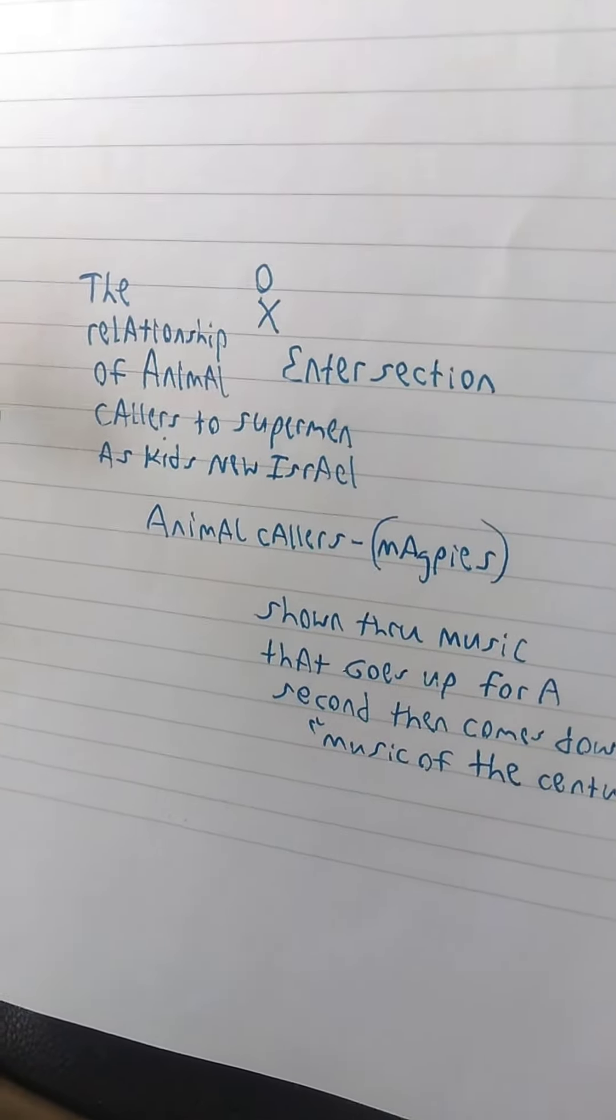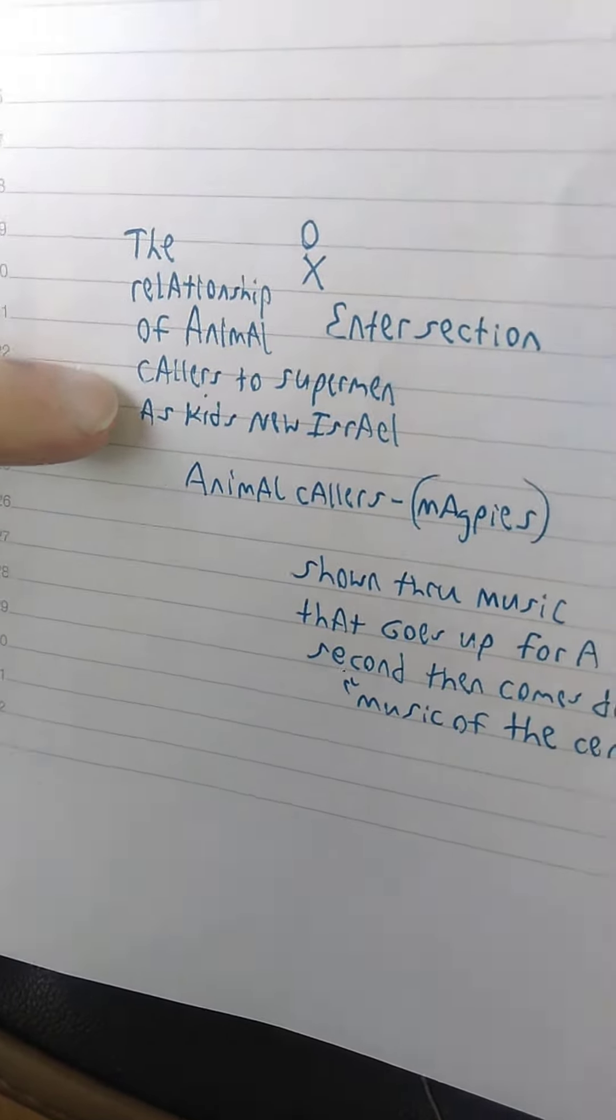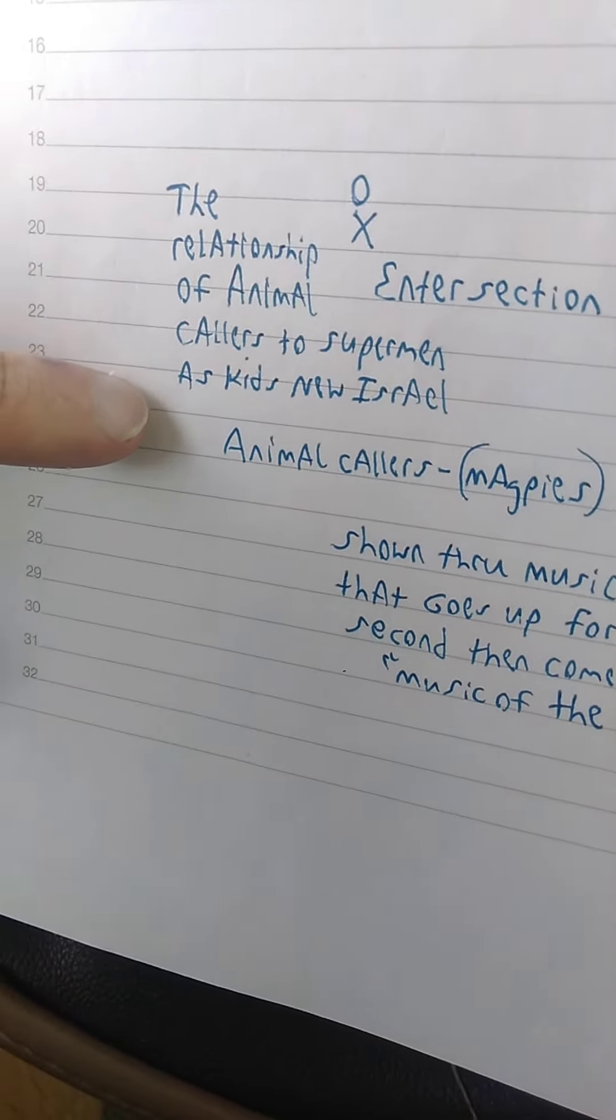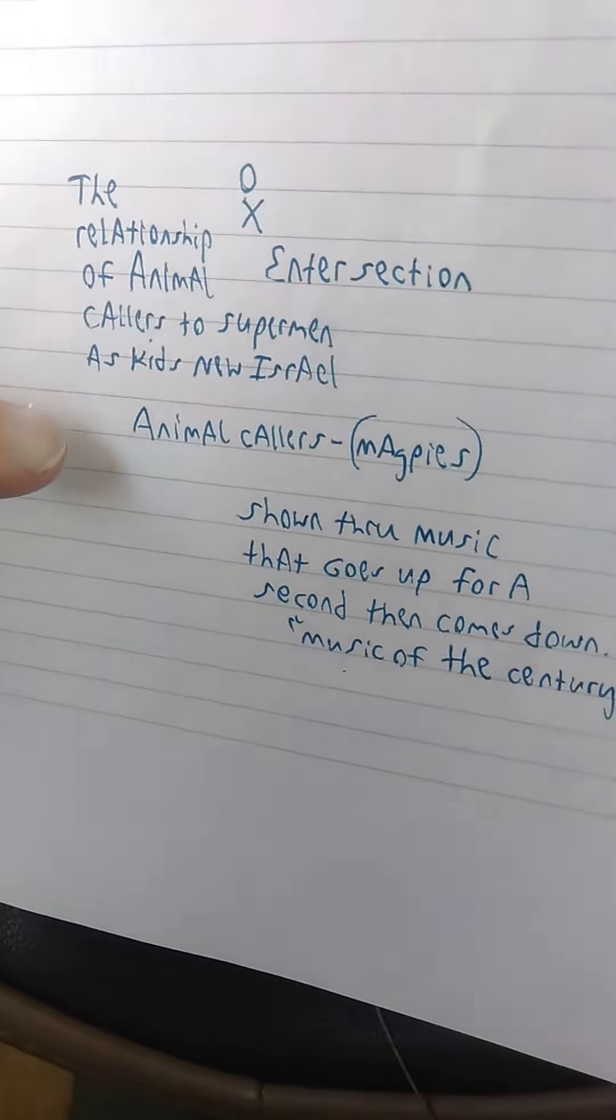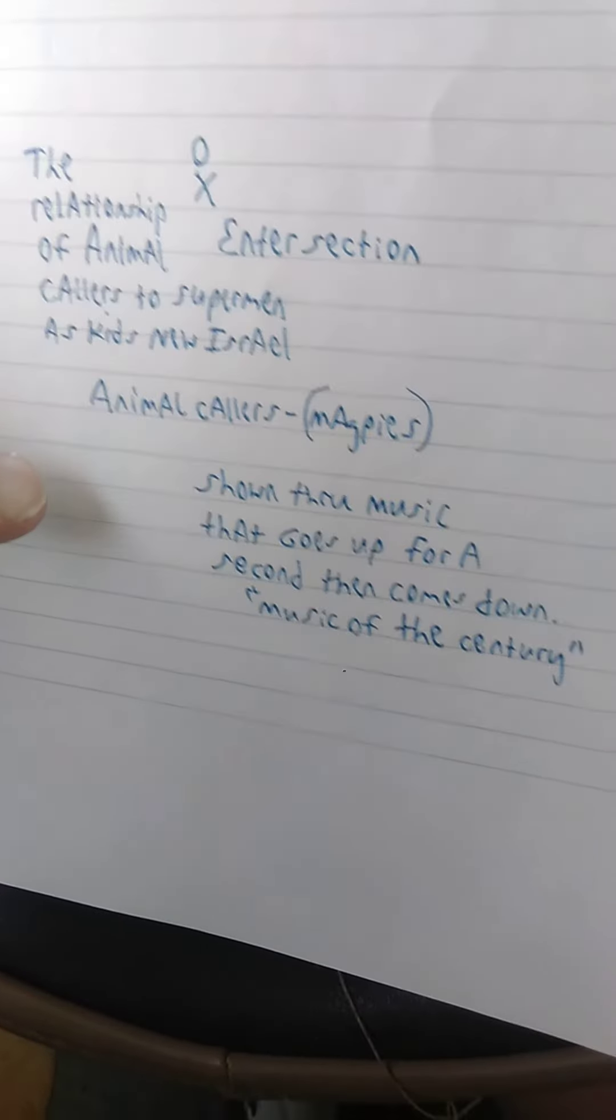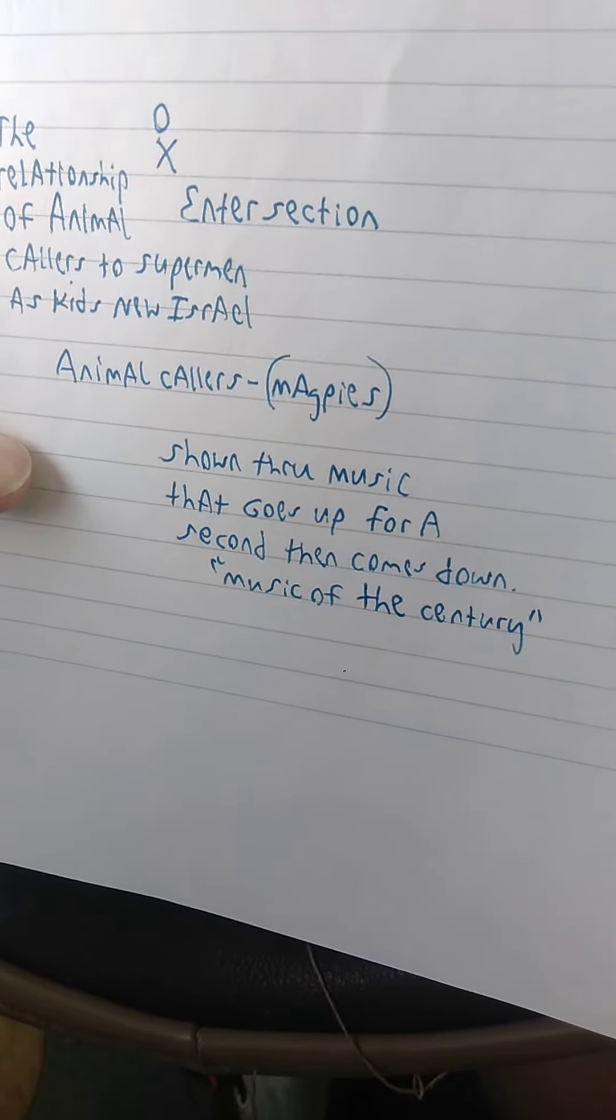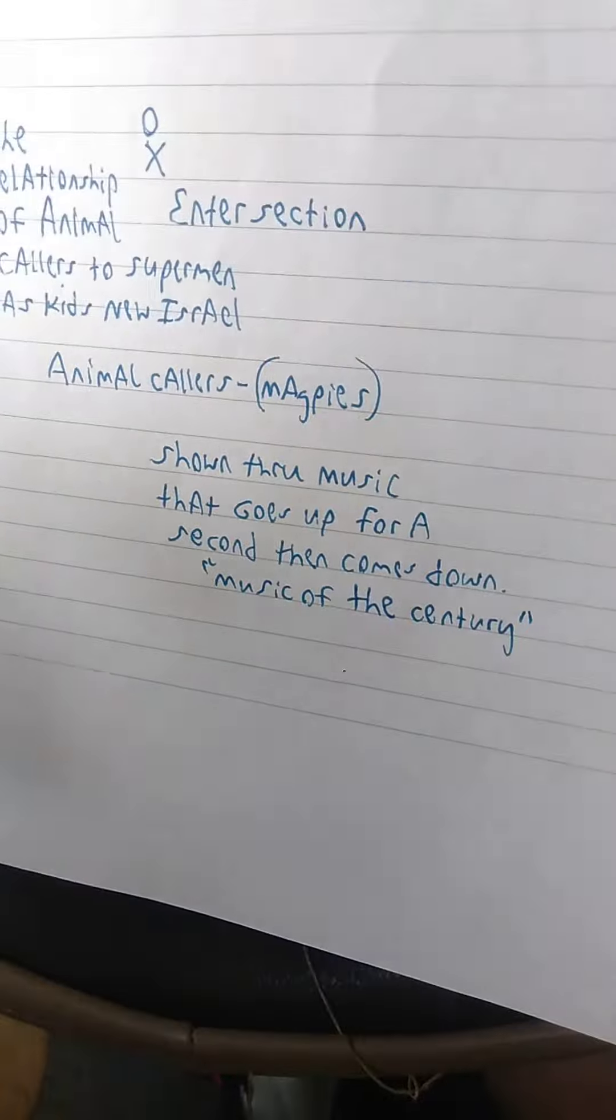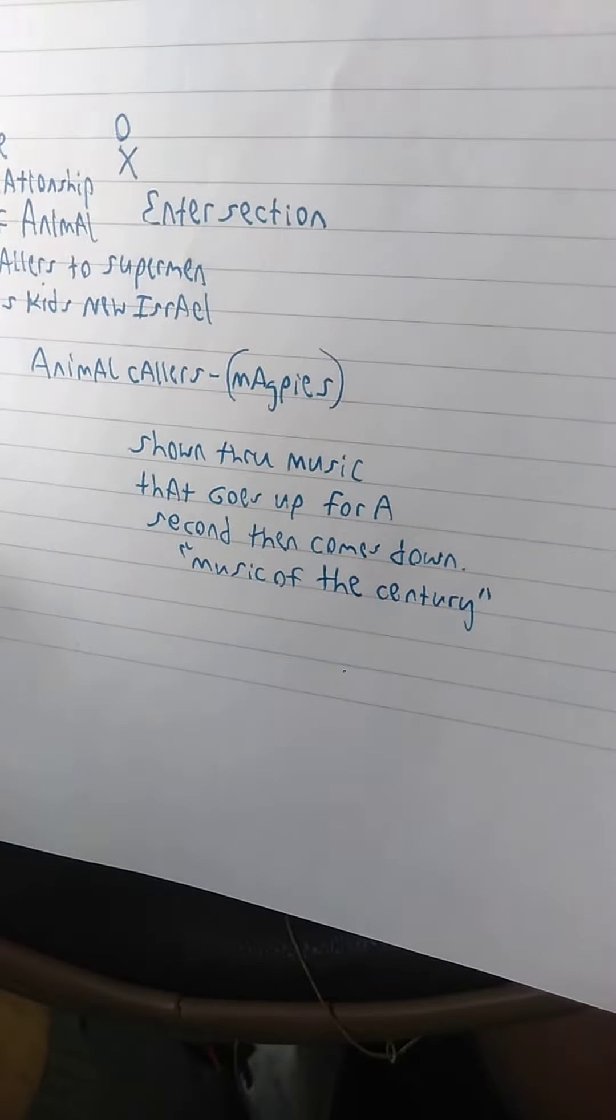Intersection, the relationship of animal callers, which are the magpie, to supermen as kids knew Israel. Animal callers are the magpies shown through music that goes up for a second, then comes down. We went over that when I was in Lexington.